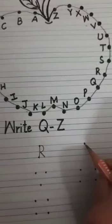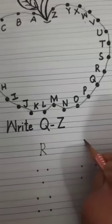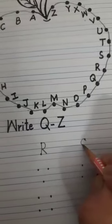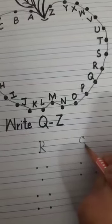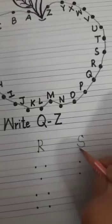What comes after R, children? It is S. Start from here. Q. Again a Q. And this is letter S.